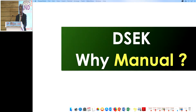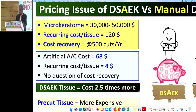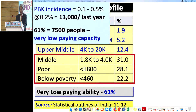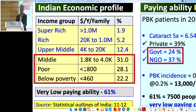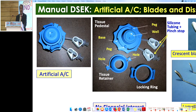So why manual DMEK? Cost is a very big factor in our country. Last year we did 6.5 million cataract surgeries. The government and NGOs covered 60% of surgeries. With a PBK incidence of 0.2%, that's 13,000 new cases every year, and among those 13,000, about 7,000 people do not have money for this surgery. So there is manual DSEK.